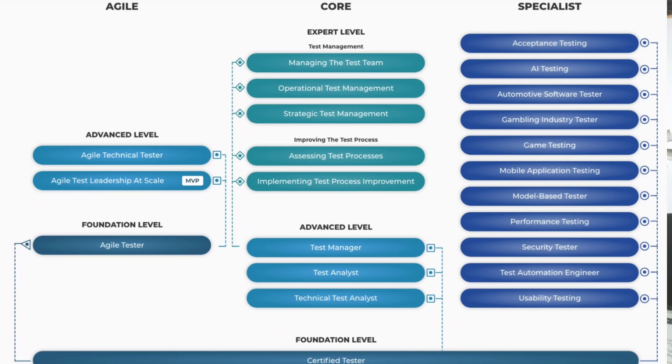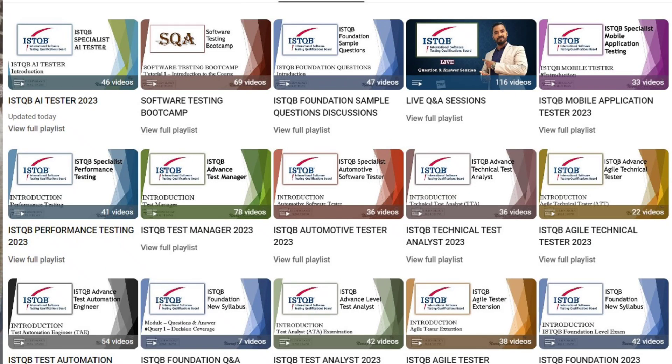In the middle we have Core segment certifications. These are role-based, talking about people's qualifications over a period of years. You can get certified as Test Analyst, Technical Test Analyst, or Test Manager — all at the advanced level. These three can only be taken after Foundation, but can be taken in any order. The recommended order is Test Analyst first, then Technical Test Analyst, then Test Manager. Test Analyst is for functional testers, Technical Test Analyst is for non-functional testers, and Test Manager is for those leading the testing team. Tutorials for each are available on the channel.